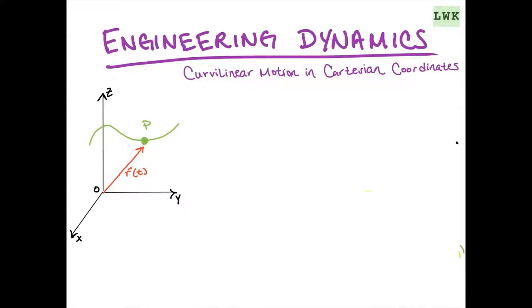With Cartesian coordinates, we have an x, y, and z component. We also have these unit vectors i, j, and k. So we have i, j, and k in the z direction.